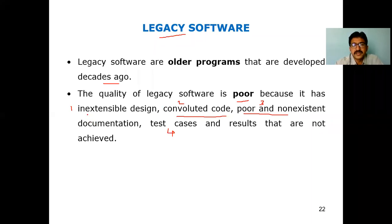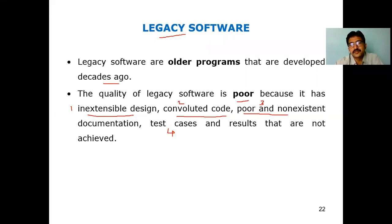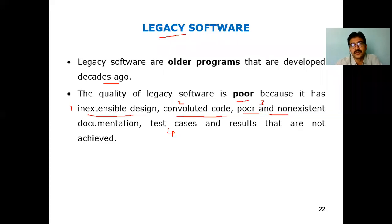Coming to the first reason — inextensible design. When you're developing any software, for example when Samsung released different versions like J1, J2, J3: the Samsung Galaxy J2 came to market based on the design of J1. If they stop at an inextensible design, the design of J1 will not be extended to J2, and if they stop at J2, they can't extend to J3. So when designing any software, it should be extendable for the next level — the feature scope should be there in the design. That is called inextensible design.